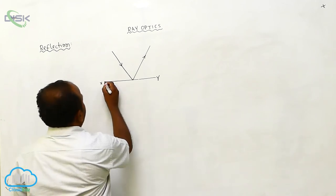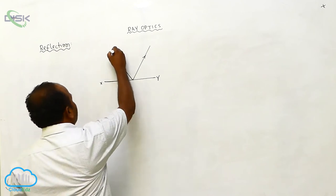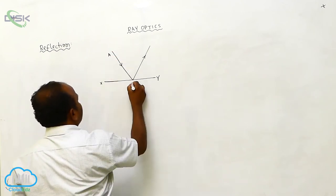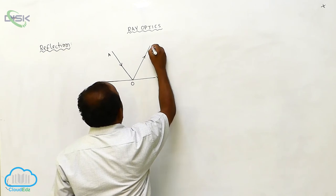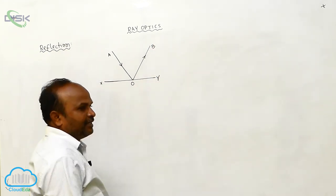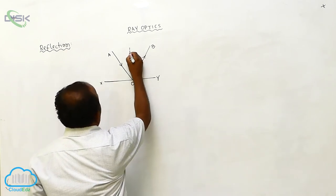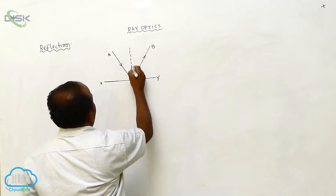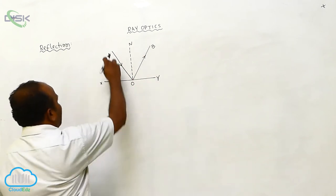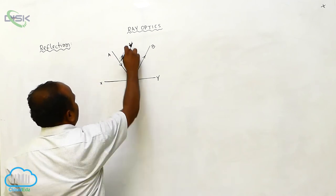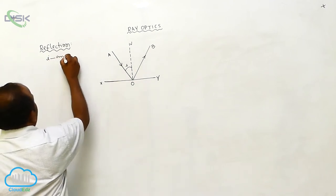Here, XY is called the obstacle. The incoming ray AO is called the incident ray. The outgoing ray OB is called the reflected ray. For the obstacle, there is a normal, represented by N. The angle between the incident ray and the normal is called I — the angle of incidence.